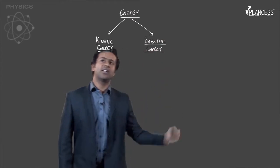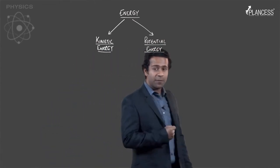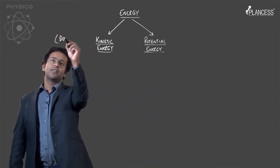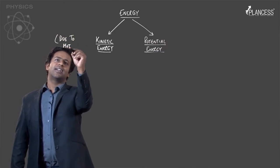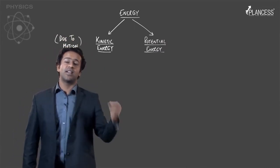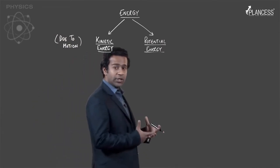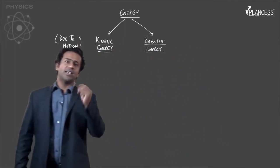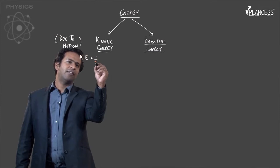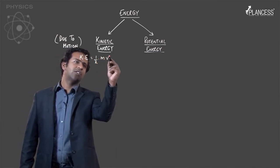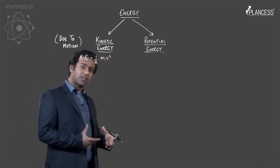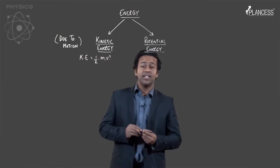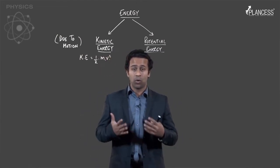Let us start our discussion with kinetic energy. Kinetic energy is the energy carried due to motion. The energy that any particle with some mass would have owing to its motion is called kinetic energy, and the expression for kinetic energy is ½mv², where m is the mass of the particle and v is the speed of the particle.